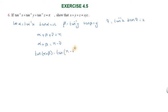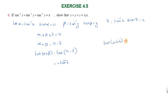From alpha plus beta plus gamma equals pi, we get alpha plus beta equals pi minus gamma. Taking tan on both sides: tan(alpha plus beta) equals tan(pi minus gamma), which equals negative tan gamma. Using the tan addition formula: tan(A plus B) equals tan A plus tan B divided by 1 minus tan A times tan B.